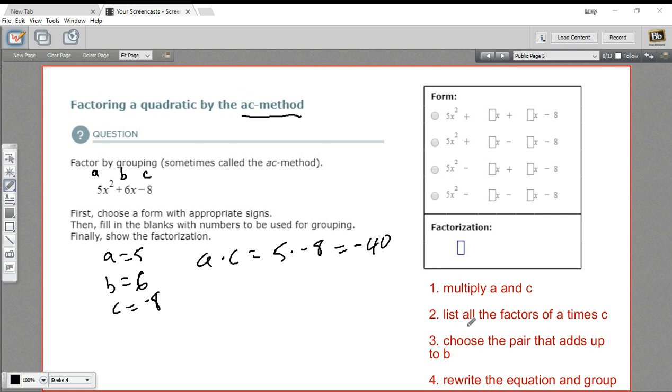And then the next step is to list all the factors of A times C. We've got a negative number here, so we're going to do negative and positive factors. So let's start making a list here: negative 1 and 40.